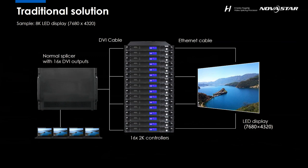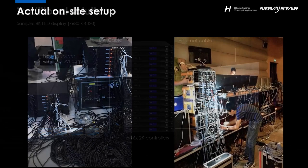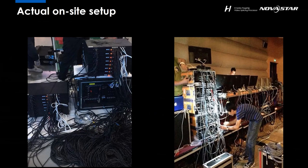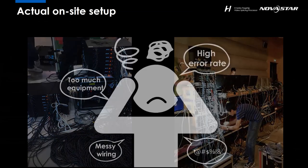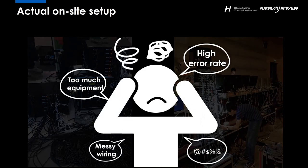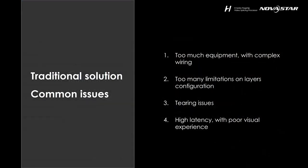In the front we may have multiple video source inputs. And this is the on-site situation: there are too many cables — Ethernet cables, DVR cables, USB cables, etc. The cable management is killing me. More devices and more cables make the wiring more complex, increasing the error rate of the whole system. We may also face video tearing issues between several outputs of the splicer, and more devices cause high latency. With layer configuration, there are too many limitations. Whenever I think about this situation, I get a headache. Is there a new product — the H Series — that can help with this?